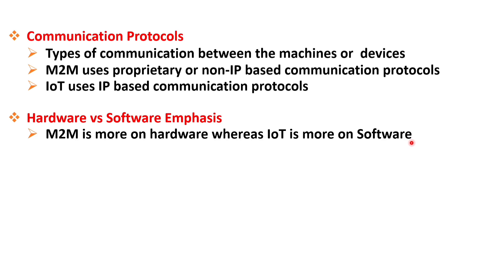M2M solutions often require specialized hardware devices with built-in communication protocols and interfaces to facilitate direct machine-to-machine communication. On the other hand, IoT places a greater emphasis on software. While hardware components are still essential in IoT systems, the real value and innovation lie in the software layer. IoT systems rely on software applications and platforms to collect, analyze, and process data from various connected devices, enabling data integration, analytics algorithms, and services for end users.